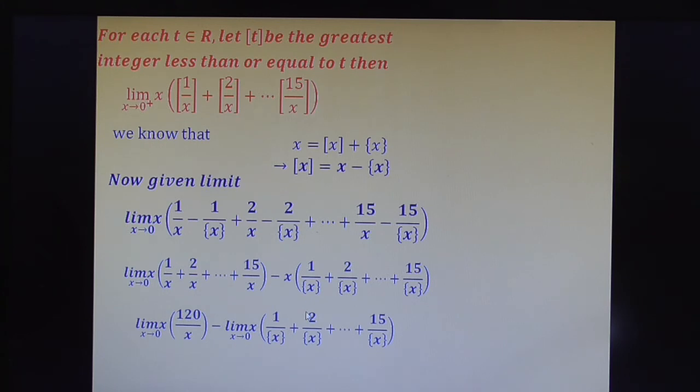So it gives 0 point something. So it is a finite value. Why? Because the fractional part of x lie between 0 and 1. Therefore this is the finite value.